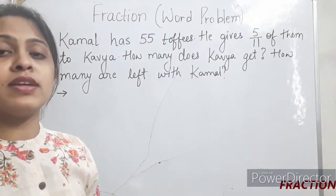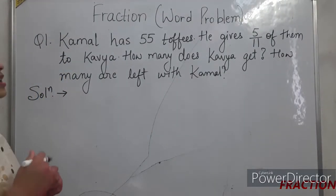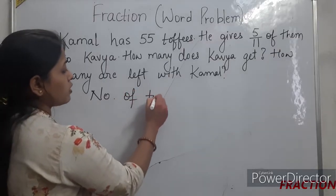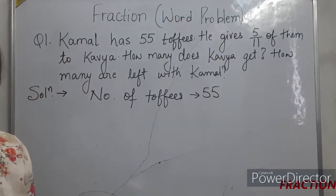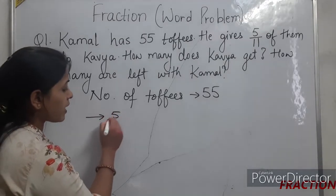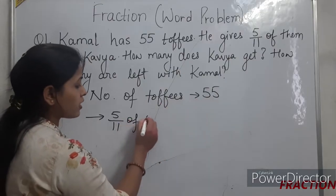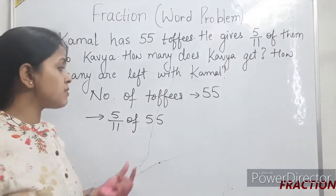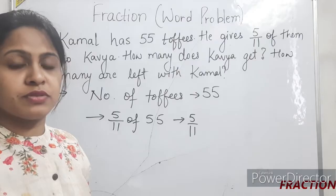There is one more question: how many toffees are left with Kamal after giving to Kavya? To solve this, first we write the number of toffees Kamal is having — that is 55. He has given 5 by 11 of 55 toffees. In mathematics, 'of' means multiplication.